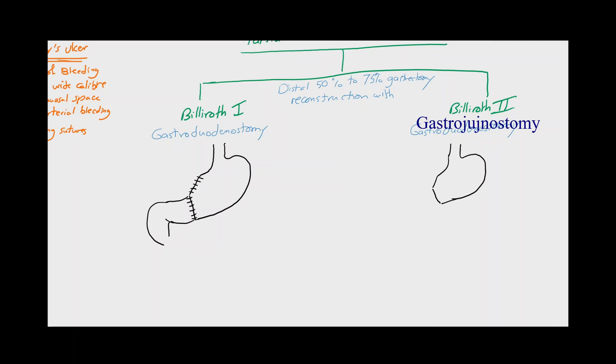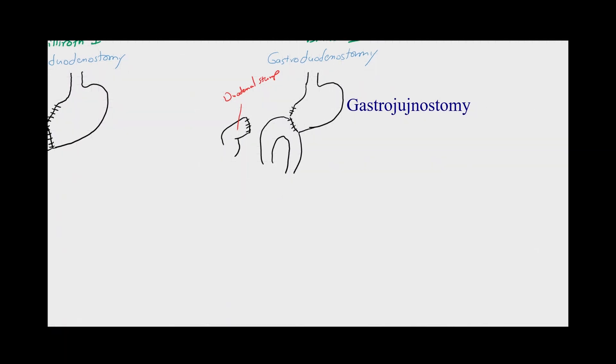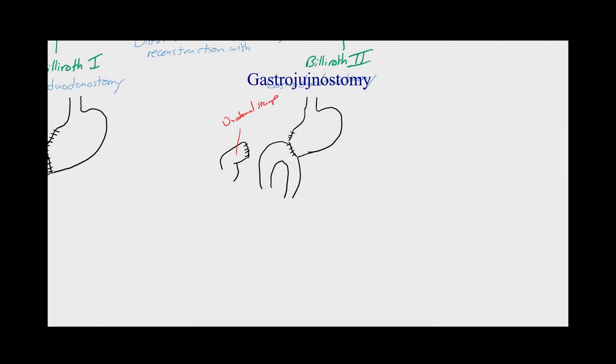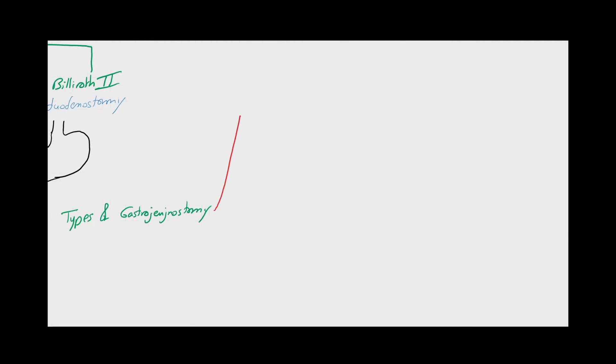On the other hand, in cases of Billroth 2 operation, the reconstruction is achieved through a gastrojejunostomy. Here the proximal gastric part is connected to the first jejunal loop, leaving the duodenal stump as a blind loop. The gastrojejunostomy itself has many variations, and all of them are accepted strategies of reconstruction after a distal gastric resection.